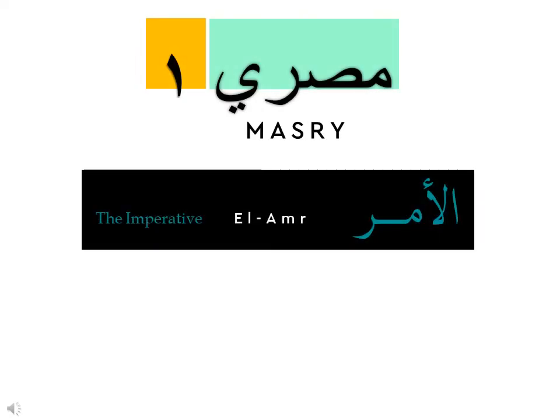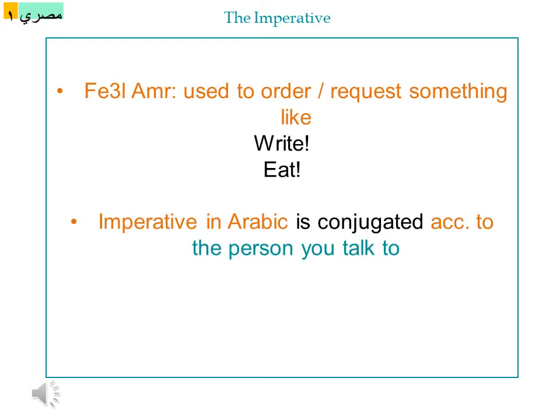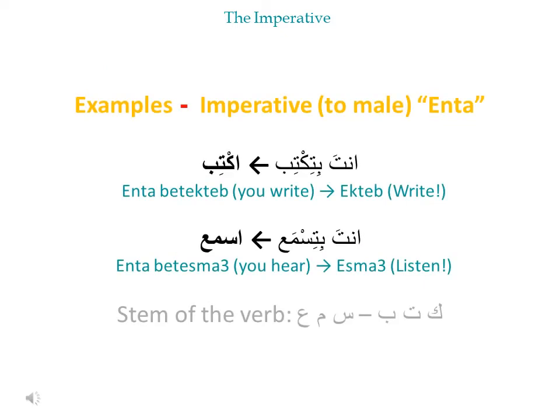طباح الخير. فعل الأمر means in Arabic 'order verb' — فعل means verb and أمر means order. We use this kind of verbs when we want to order or request something from someone, like 'write' or 'eat'. Imperative in Arabic is conjugated, so it will change. Now we will have some examples of how to use the imperative.